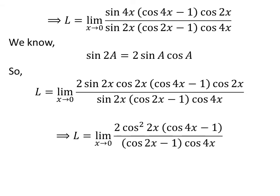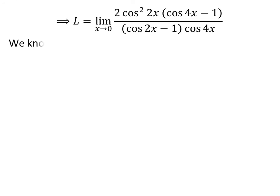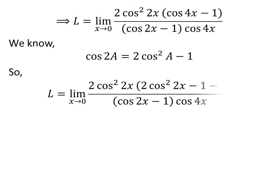Here I have cancelled out the common factor sine of 2 times x in the numerator and the denominator. We know cosine of 2 times a is equal to 2 times square of cosine of a minus 1. The verification of the identity has been explained in the video appearing in the upper right corner; the link is also given in the description. Application of the above identity gives us L is equal to limit of 2 times square of cosine of 2 times x times 2 times square of cosine of 2 times x minus 1 minus 1, upon cosine of 2 times x minus 1 times cosine of 4 times x, as x approaches 0.